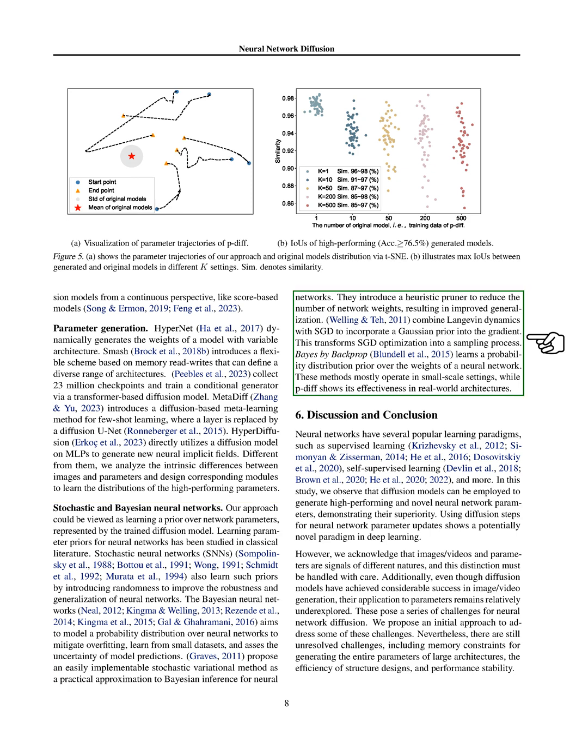While these methods have been effective in small-scale settings, our approach, leveraging a trained diffusion model, shows promise in real-world architectures, offering a new way to learn parameter priors for neural networks.